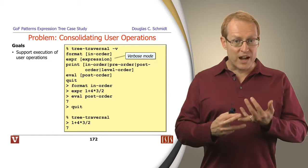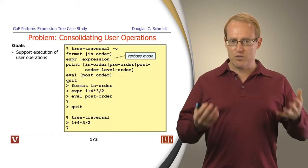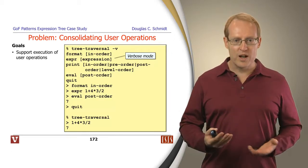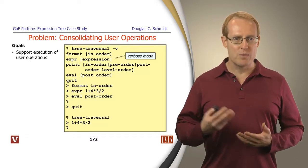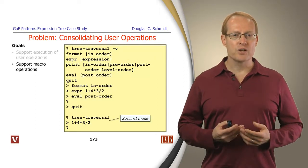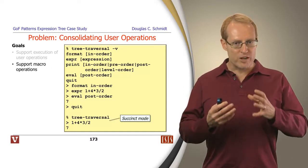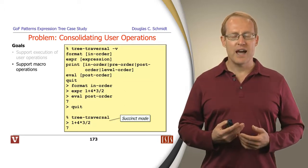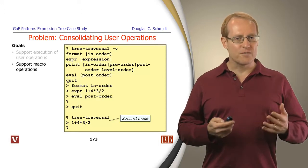We want users to be able to provide the expressions as a string, print the expressions in various traversal orders, evaluate the expressions using various kinds of traversal orders, and quit the program. We also want to be able to provide so-called macro operations, which we use in succinct mode — where you get a brief prompt, type in an expression using in-order syntax, and then get the result back when you hit return.